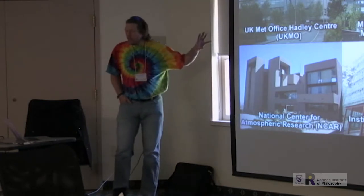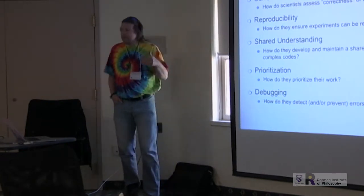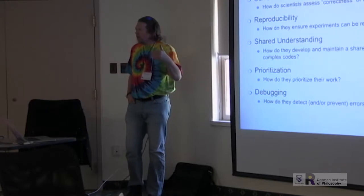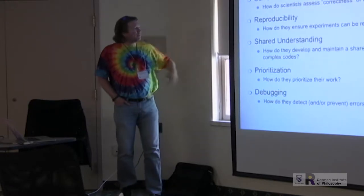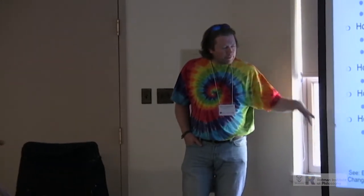To give you a sense of what I was doing in these studies, I had a whole series of initial questions to guide the studies that focused very much on the software process itself. How do the scientists themselves assess correctness of their code, of their models? How do they ensure that they get reproducibility? How do they develop a shared understanding when these codes are large and complex? And as we saw from Gavin's talk this morning, they are huge, complex codes. And then the question about work prioritization. How do they prioritize what to do next? What changes need to be made to the model? Which features should they look at? And how do they debug the software?